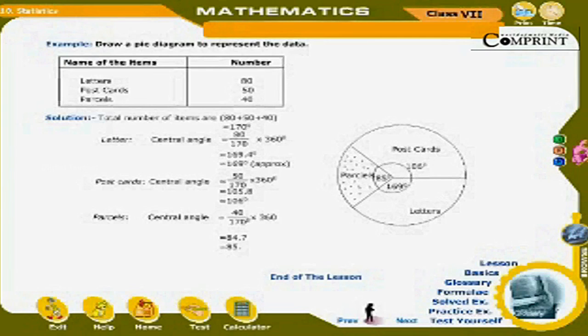Postcards: Central angle is equal to 50 upon 170 into 360, which is equal to 105.8, which is equal to 106.